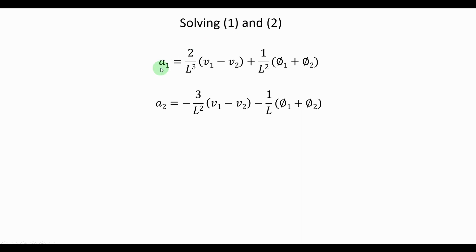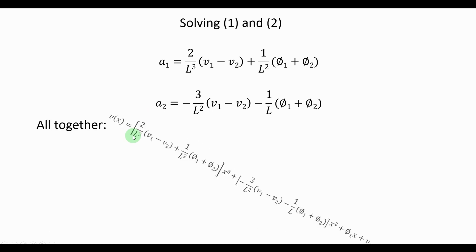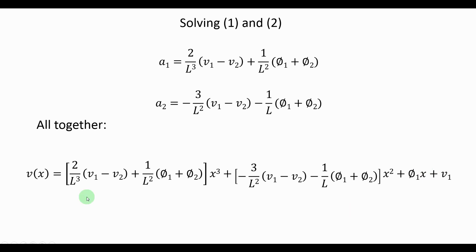Solving equations 1 and 2, we get a1 and a2 expressed in terms of the nodal displacements and rotations. You can do this as an exercise to check that the mathematics is correct. We then substitute a1, a2, a3, and a4 back into the original displacement equation, giving us a larger equation. Don't be afraid — it's just a long equation. You can identify a1 multiplying x³, a2 multiplying x², φ1 multiplying x, and v1 as the constant term.